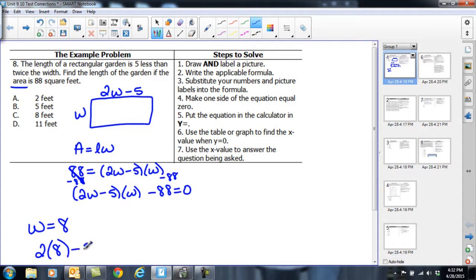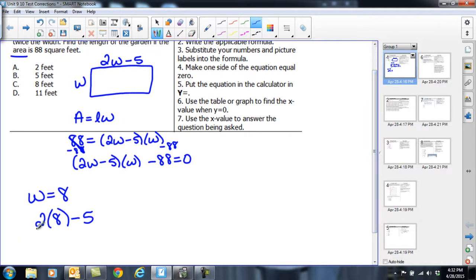Two times eight minus five. And then I have to do the math. Well, two times eight is sixteen, and sixteen minus five is eleven. And so I get that the length of this is eleven feet. So the answer is D.